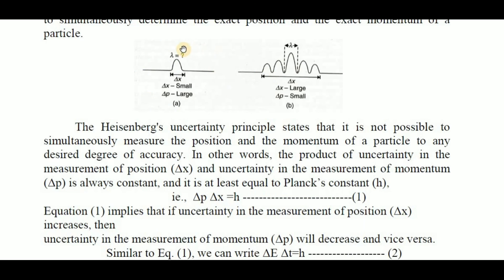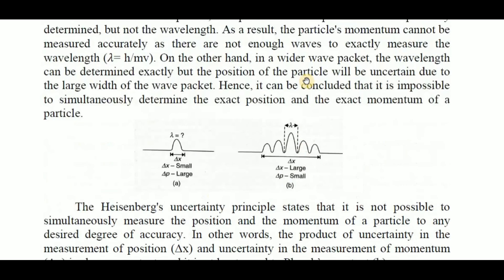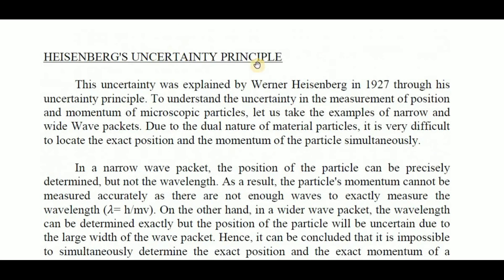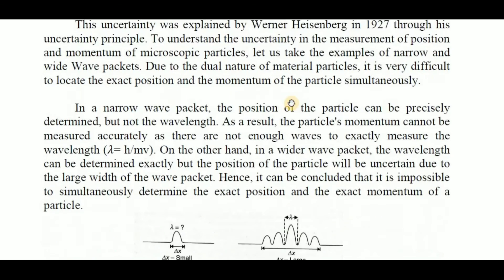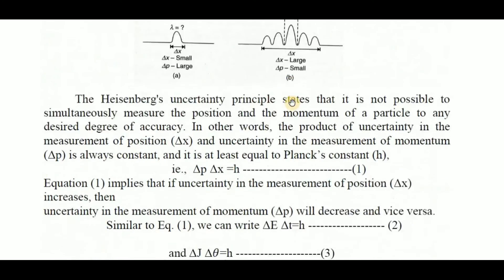We can measure the position in a small wave packet, but we cannot measure the wavelength in a small wave packet. In the large wave packet, we can measure the wavelength, but we cannot finalize the exact position of the particle. So this is Heisenberg's uncertainty principle — this is very important.